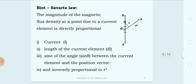The next topic is Biot-Savart's Law. The law gives information about both the magnitude and direction of the magnetic field intensity at a point due to a current carrying element, or the differential current carrying element.